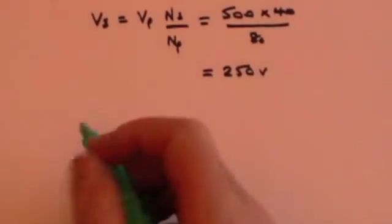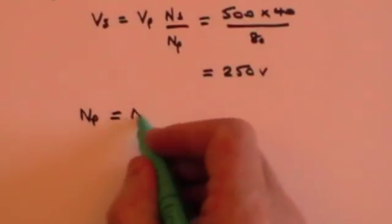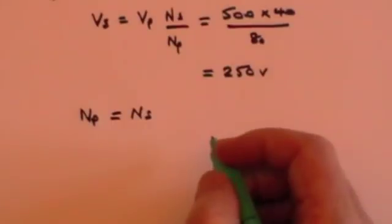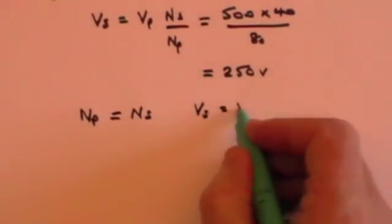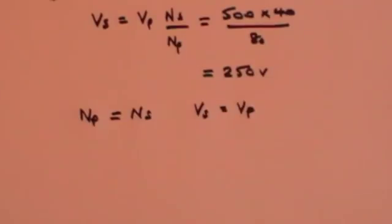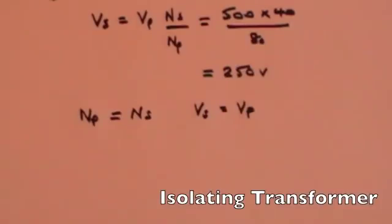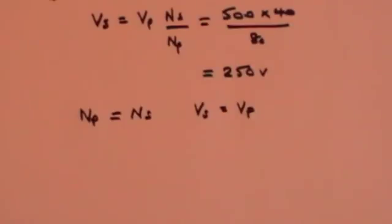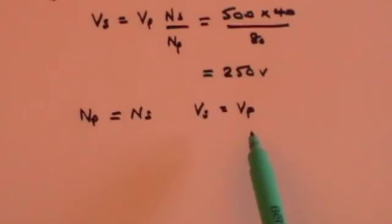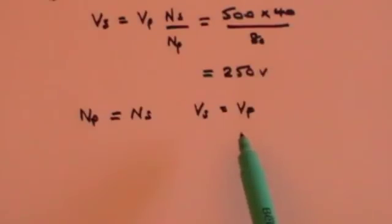There are some transformers where the number of turns on the primary equals the number of turns on the secondary. If you look at the formula, you'd find that the voltage of the secondary therefore equals the voltage of the primary — the voltage you put in is the voltage you get out. That is called an isolating transformer. Its purpose is that sometimes the input voltage is unreliable — maybe there are spikes where you get a jump in the voltage, which could cause great damage to something like a computer. If you put it through an isolating transformer, you get the same voltage out, but much less susceptible to a sudden surge in the primary — that will be smoothed out in the secondary.